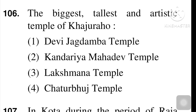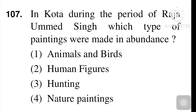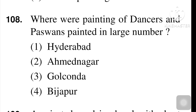Next question: the biggest, tallest, and most artistic temple of Khajuraho — option number two, Kandariya Mahadev Temple, is the answer. Next question: in Kota during the period of Raja Umed Singh, which type of painting was made in abundance? The answer is hunting pictures. Next question: where were paintings of dancers and Paswans painted in large numbers? The right answer is Golconda, option number three.